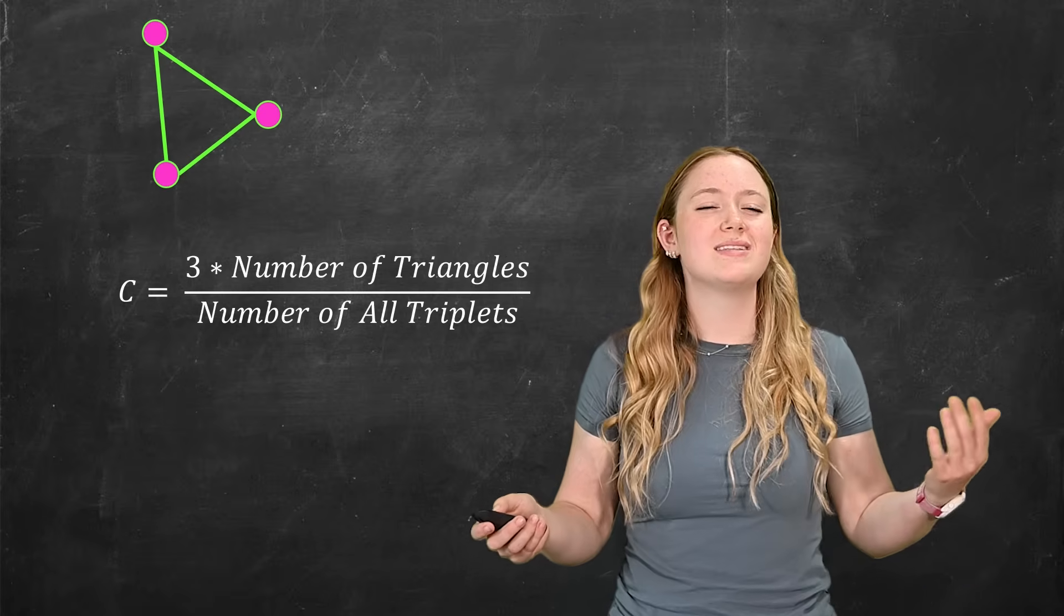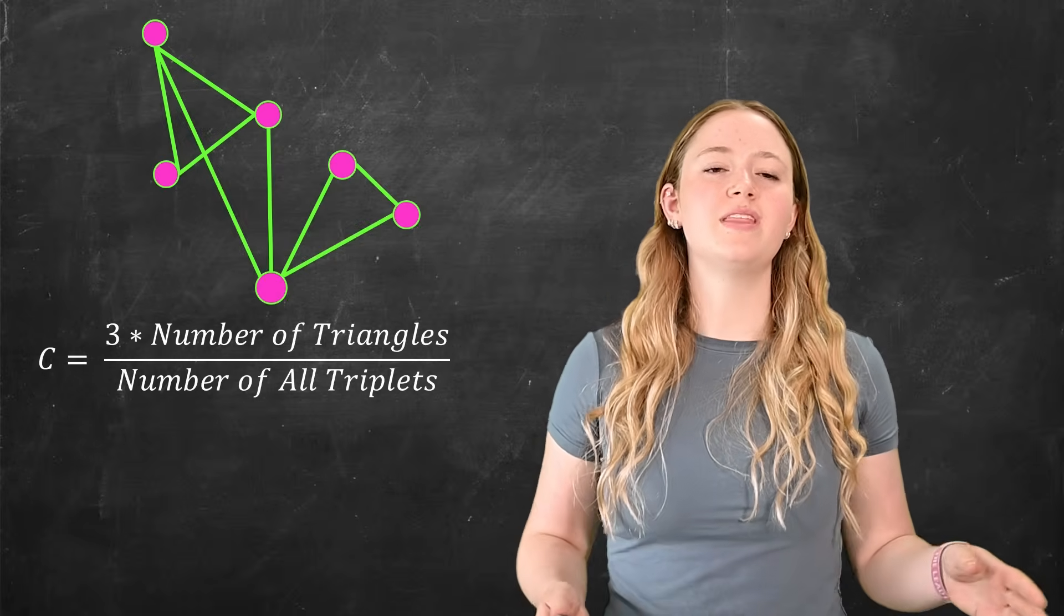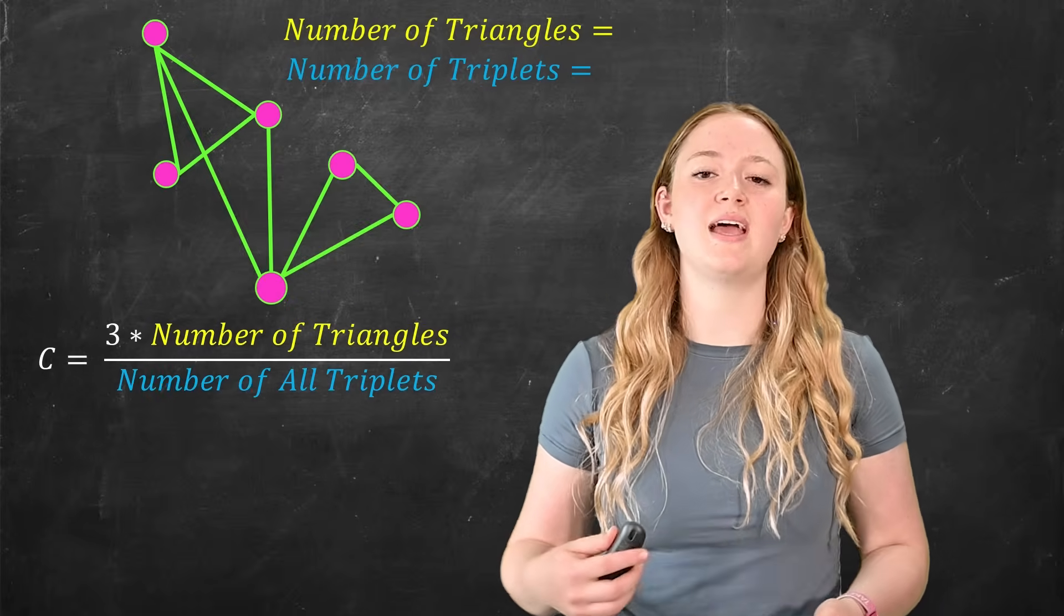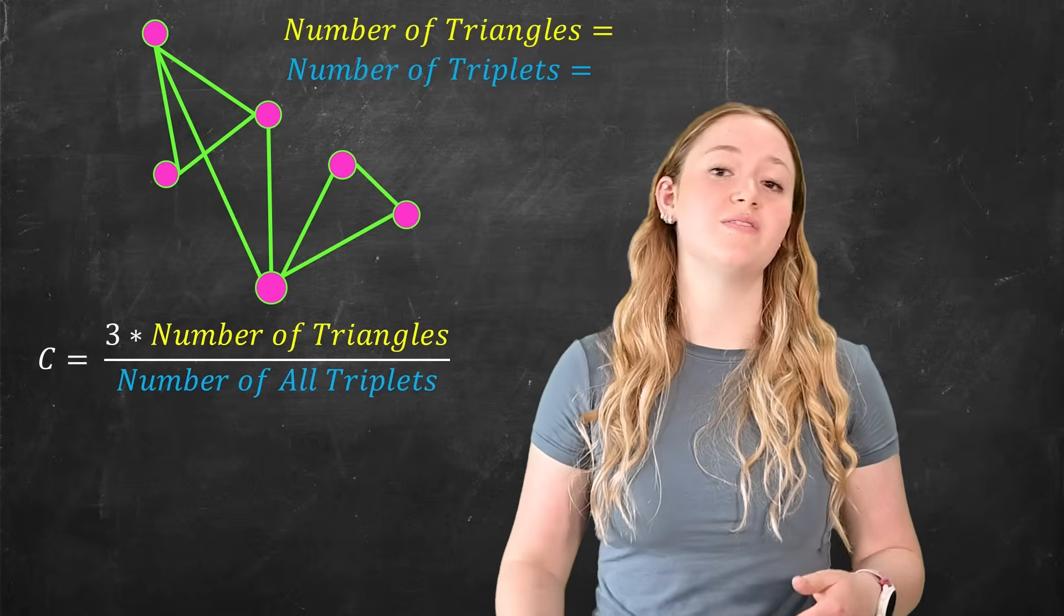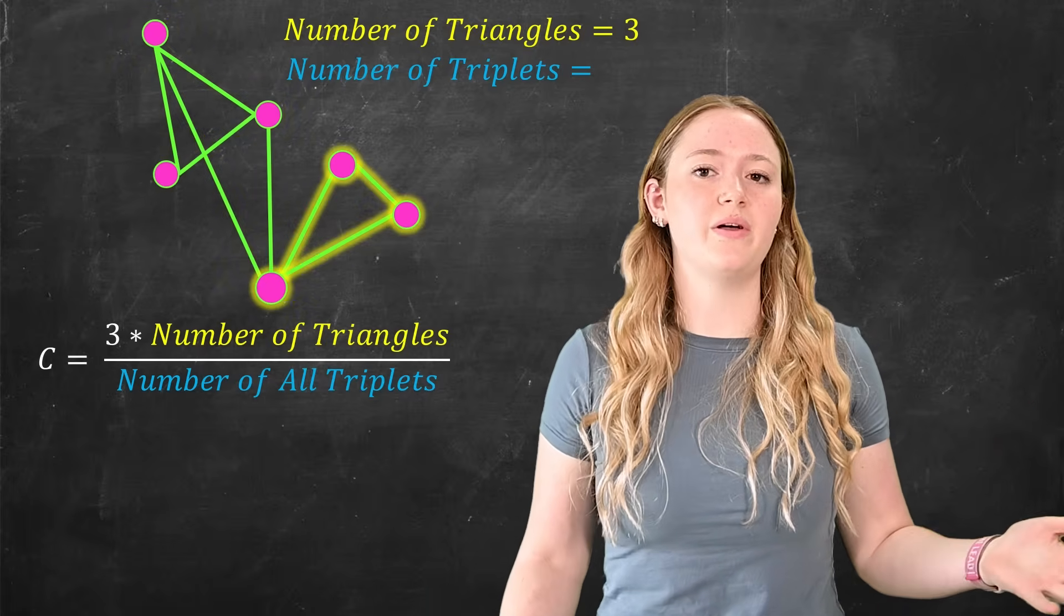Let's look at an example because it's a little bit confusing to think of. So let's take this example. We'll work our way through it, first counting the triangles and then counting the triplets. To start, we've got the first triangle, the second triangle, and the third triangle. So we've got three in total.